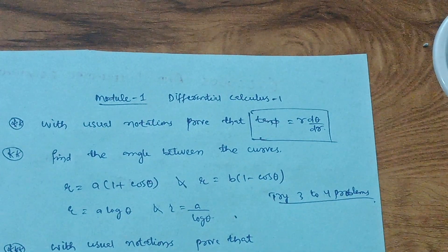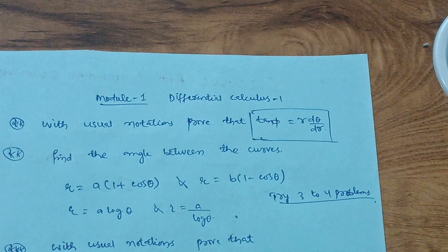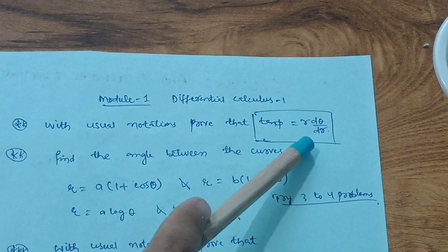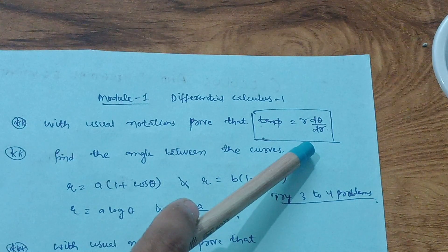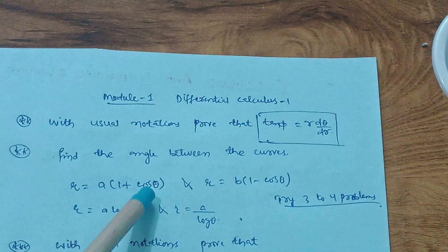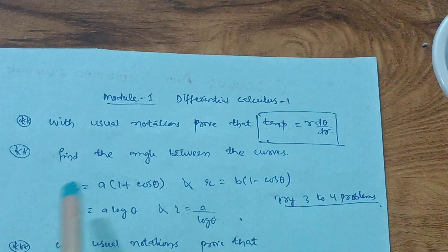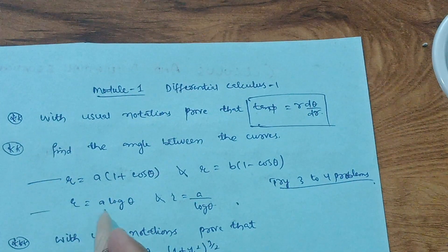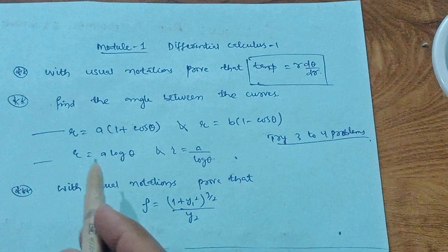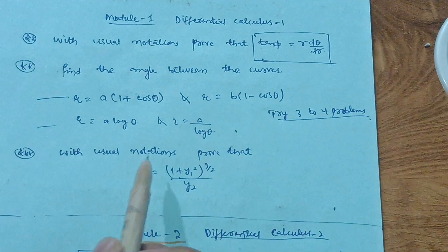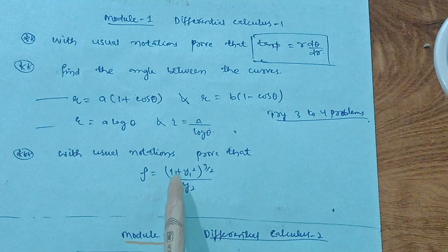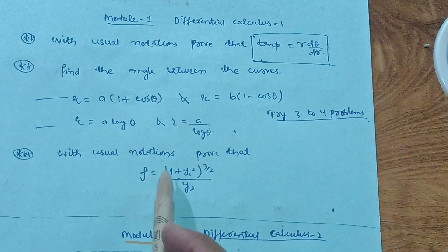Next is Module 1, Differential Calculus 1, which contains polar curves, angle between radius vector, and related topics. The most important question is: with usual notations, prove that tan φ = r dθ/dr — this is asked almost every year. Then, find the angle between the curves such as r = a(1 + cosθ) and r = b(1 − cosθ), or r = a·log(θ) and r = a/log(θ). Try three or four problems from this concept. Also focus on the derivation: with usual notations, prove that ρ = (1 + y₁²)^(3/2) / y₂.